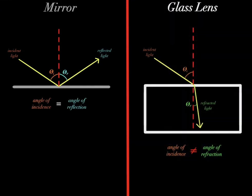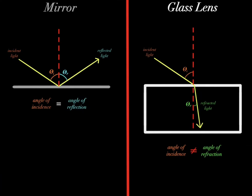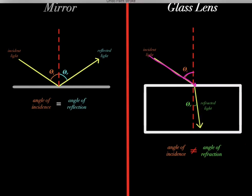In the last video, we learned that the angle of incidence will always equal the angle of reflection — that is the law of reflection, and that will always be true. However, we also learned that the angle of incidence will not equal the angle of refraction. So the angle of incidence usually will not equal the angle of refraction.